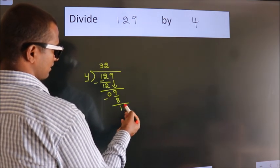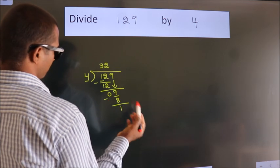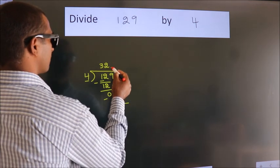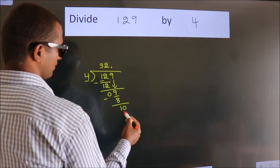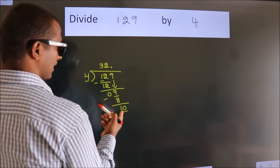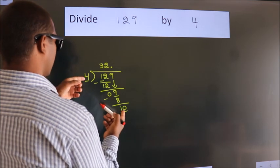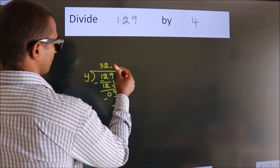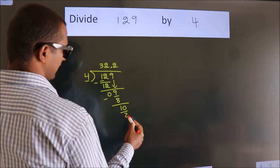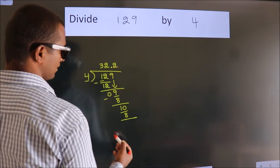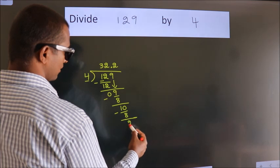After this, no more numbers to bring down. So what we do is put a dot and take 0. So 10. A number close to 10 in the 4 table is 4 times 2 equals 8. Now we subtract and get 2.